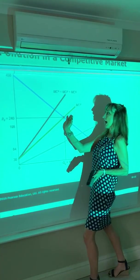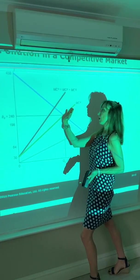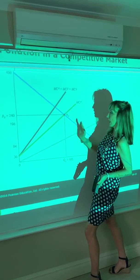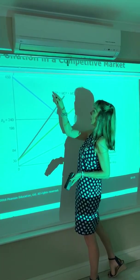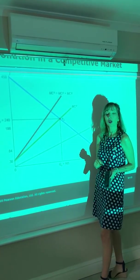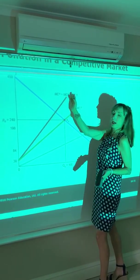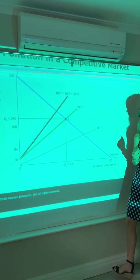If we were to add to your private marginal cost the cost of this externality, this whole curve would pivot up and we get your social marginal cost, which is your private marginal cost plus the cost of the externality.